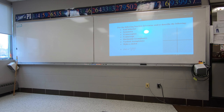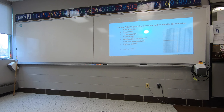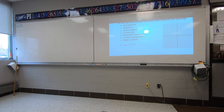We finished with number four yesterday, where we graphed a rational function — some type of fraction where you had to figure out symmetry, horizontal asymptotes, vertical asymptotes, all that good stuff.